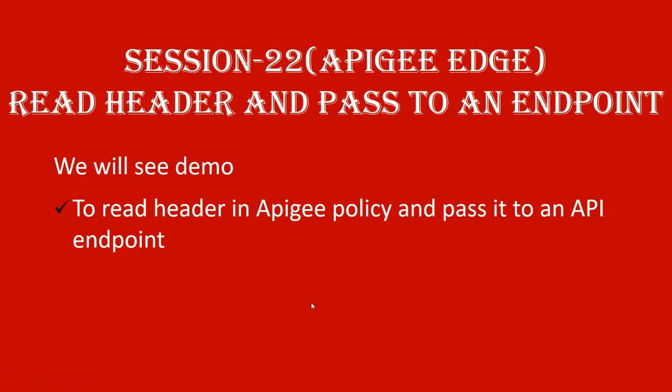This is session 22 of the Apigee Edge course for business. In this session, you will learn about reading input from the request and passing it to the backend API service. This is a continuation of our previous session, so in case you haven't watched it, I recommend you watch it before proceeding with this session.